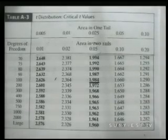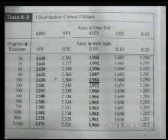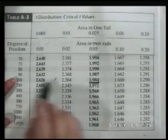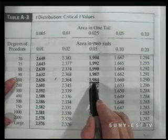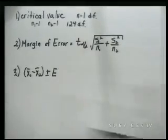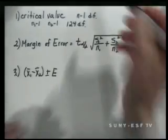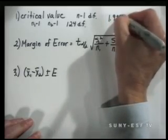Going to our Student's t-distribution table, we have only 100 or 200 to choose from, so we select the closer value for our degrees of freedom. Our critical value based on an alpha of 0.05 is 1.984.